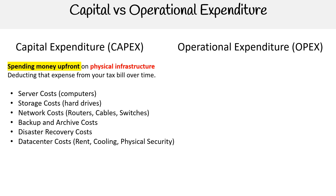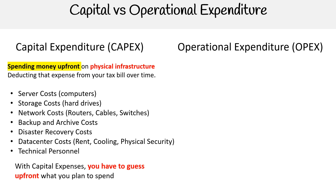You have your data center costs: rent, cooling, physical security. You also have technical personnel, hiring people to do things for you. With capital expenses, you have to guess up front what you plan to spend.